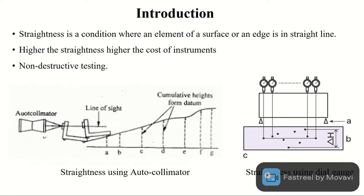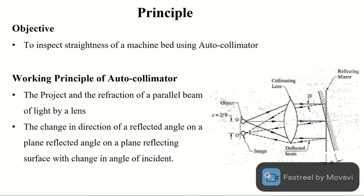In the present slide, I have defined straightness and different non-destructive methods to measure it. Straightness is a condition where an element of a surface or an edge is in exactly a straight line. Higher straightness of any instrument leads to higher cost of that particular instrument. For measuring straightness, generally three methods are used. The first one is the autocollimator for measuring straightness of a large surface. Second and third are dial gauge and spirit level for measuring straightness of a small surface. Today, we are going to use the autocollimator for the measurement of straightness, so our main objective is to inspect the straightness of a machine bed using the autocollimator.